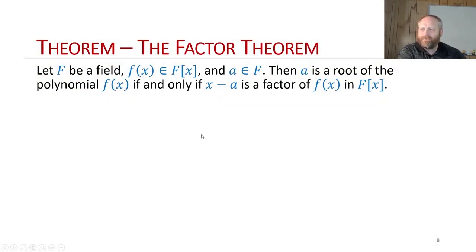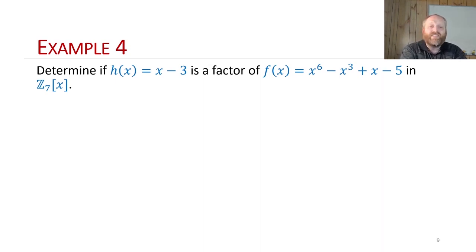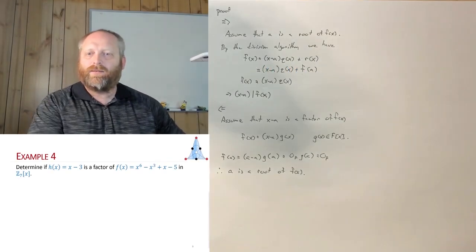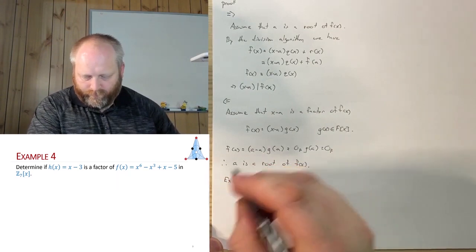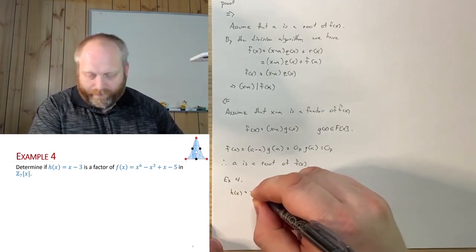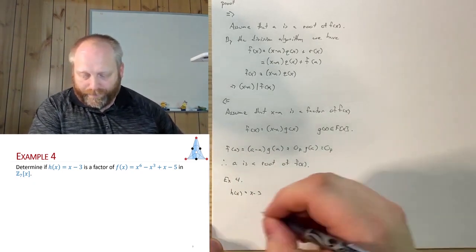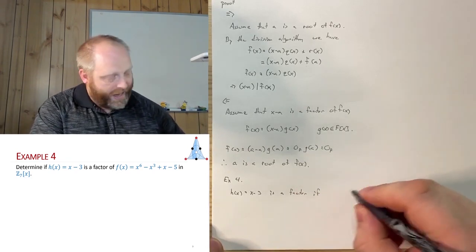Let's go through a couple of examples. The first: determine if h(x) = x minus 3 is a factor of f(x) = x⁶ minus x³ plus x minus 5, working in ℤ₇[x]. From the factor theorem, h(x) = x minus 3 is a factor if and only if 3 is a root.